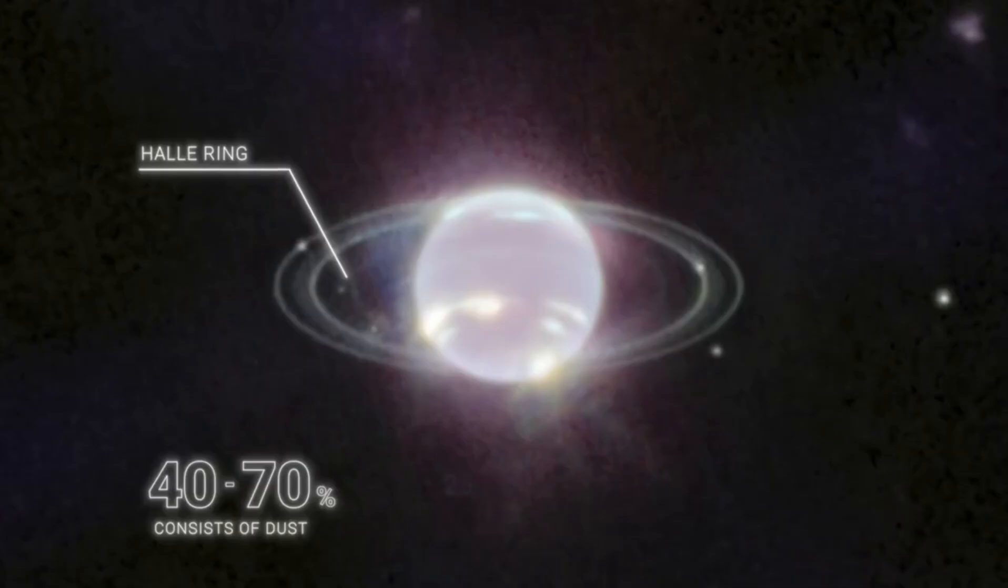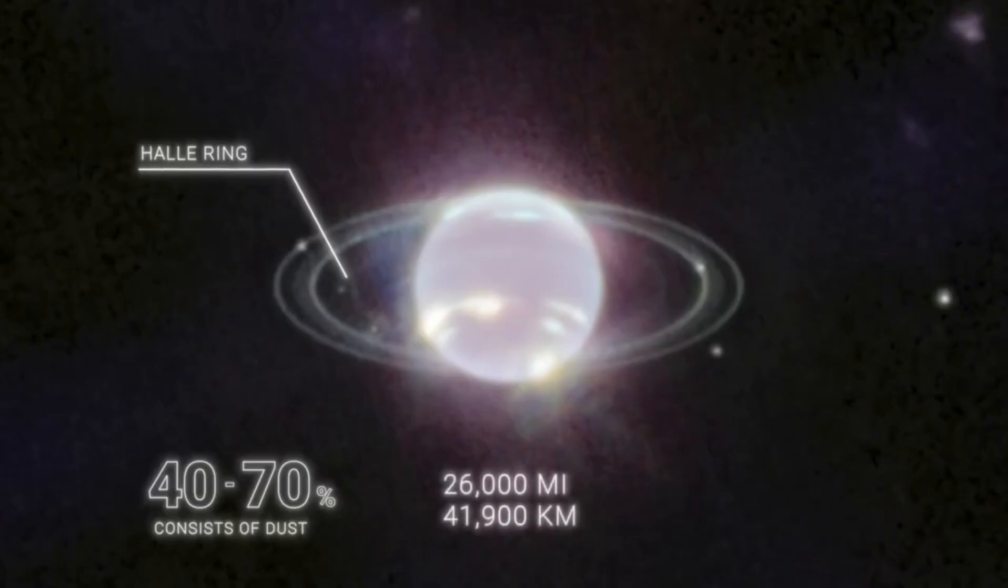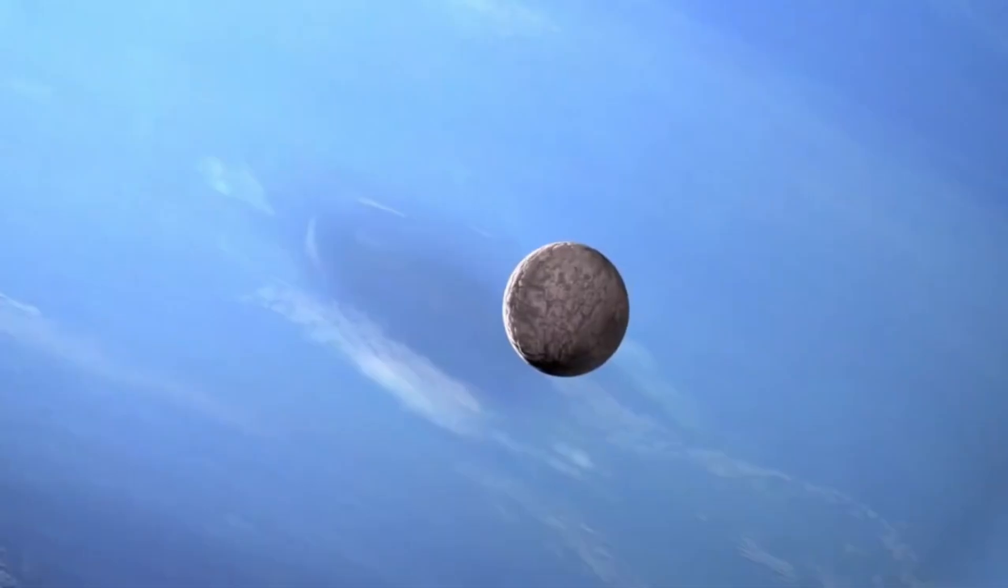The rings consist mainly of asteroids and water ice. The planet was named after the Roman god of harvest, and its astronomical symbol represents the sickle of the god Saturn.